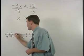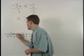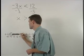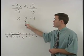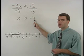Next, we draw an arrow going to the right on our number line to represent all numbers greater than negative 4.